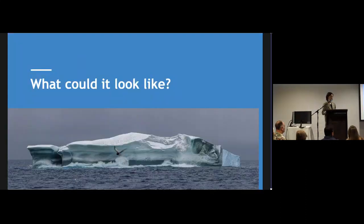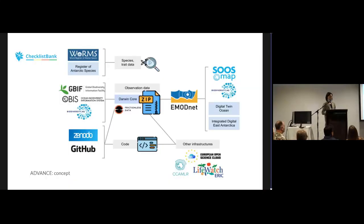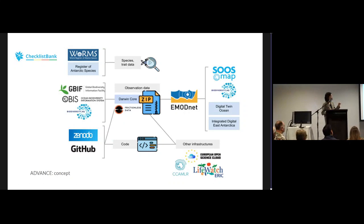So what could it look like? At the top we have taxonomic information, including trait data. In the middle, we have observations data, such as from GBIF and OBIS. If there is data that could not fit well into international standards such as Darwin Core, that can be shared in a frictionless data format in Zenodo. We also envision that code should be made available in a FAIR manner, ideally shared on GitHub.